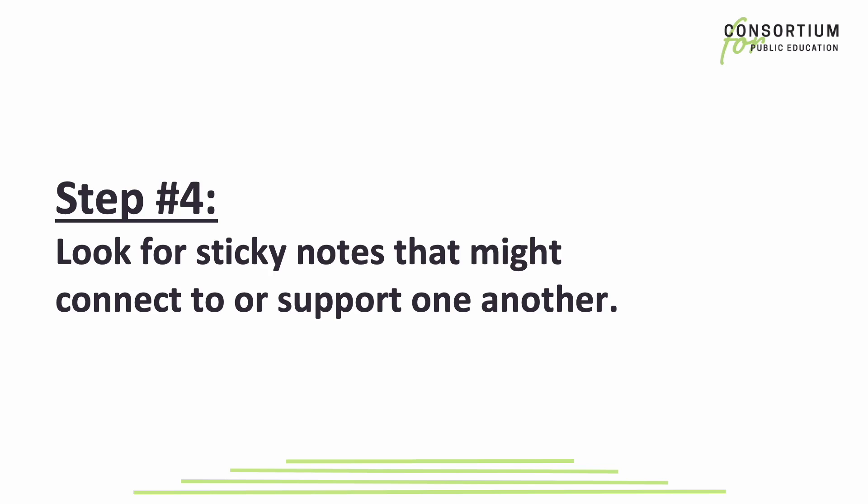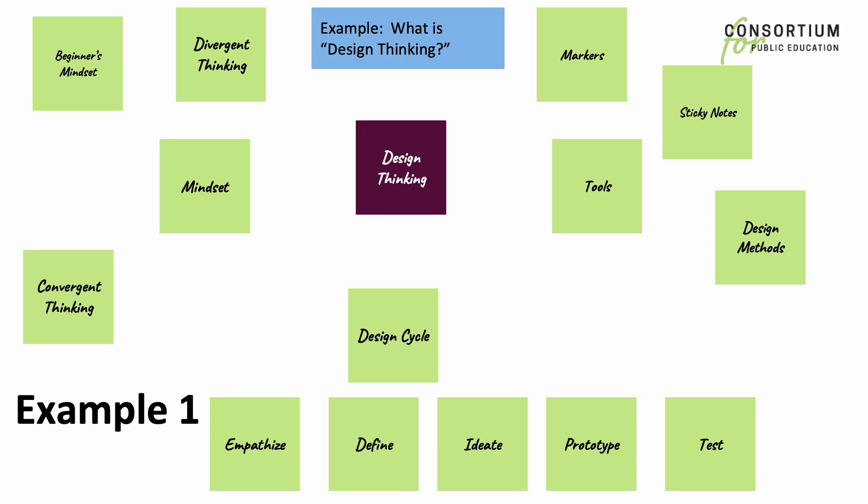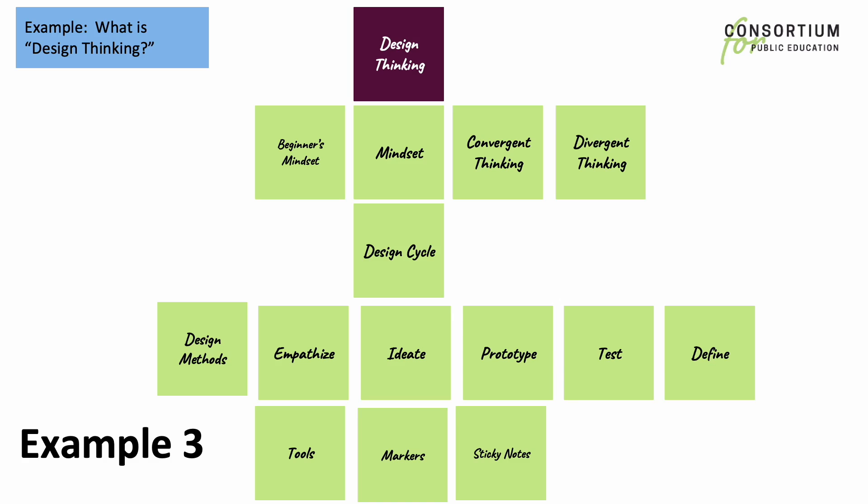In step four, look for sticky notes that might connect to or support one another. Remember, there's no one right way to organize the information. If I'm mapping design thinking, it might look like this example, or example two, or here's a third example of how I might map design thinking.